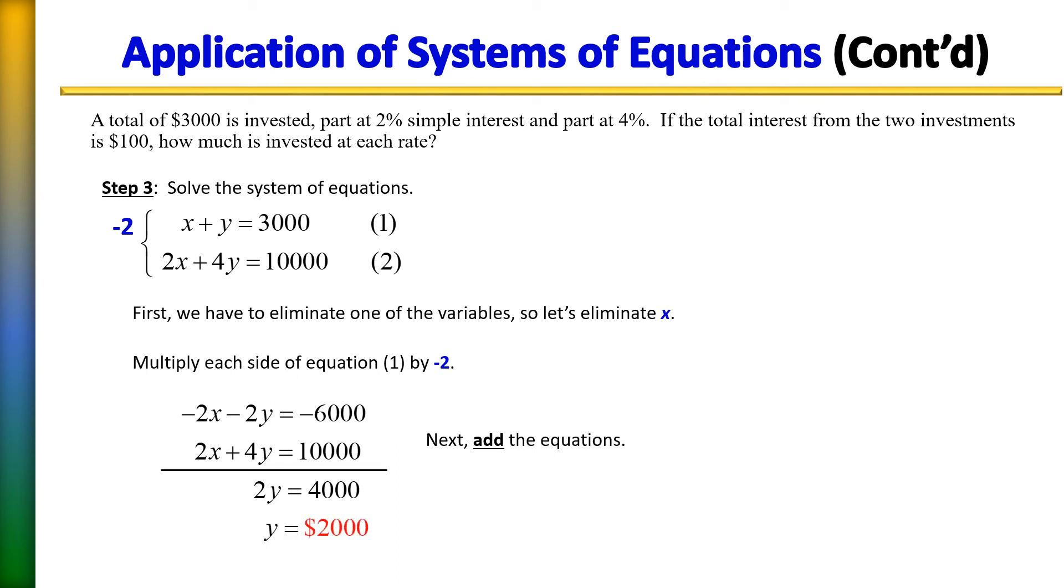So remember the y value relates to the 4% account. So that means that 2000 was invested into the 4% account. Now in terms of wondering how do I find what was invested into the 2% account? Well, you can use mental math to do that because if there was a total of $3,000 invested in all, and you invested 2000 of that into the 4% account, that means the remaining 1000 was invested into the 2% account.